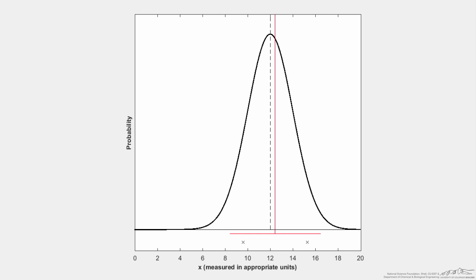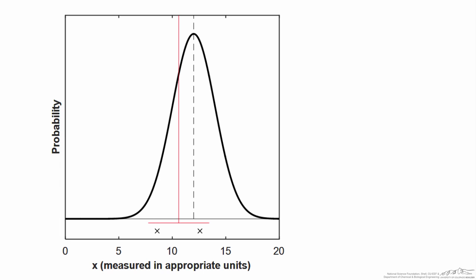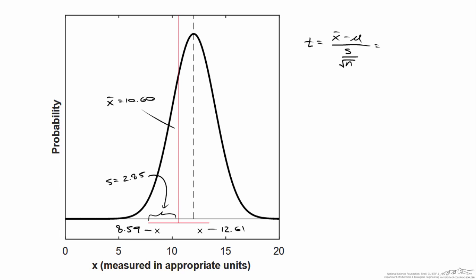Here we see a small sample standard deviation, and here's a relatively large one. For each simulation I can calculate a value for t. For example, I collected measurements of 8.59 and 12.61, giving a sample mean x-bar of 10.60 and a sample standard deviation s of 2.85. So t equals 10.60 minus the population mean of 12, divided by 2.85 divided by the square root of 2, giving t equal to negative 0.695.